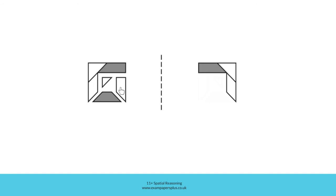Now consider this shape. This shape towards the right of this figure will be towards the left of this one, the same distance away from the mirror line as in the original and having the same relationship with this grey shaded shape. So that shape will reflect to look like this.